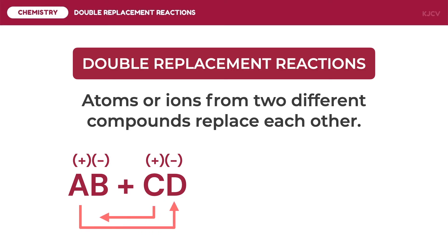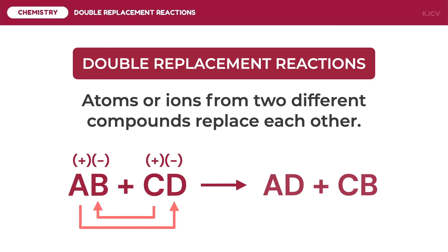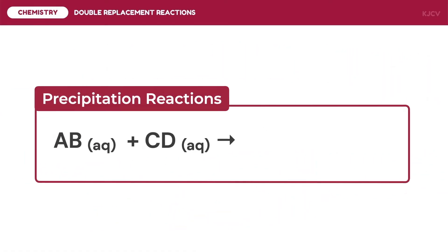In this case, ion A will bond with ion D and ion C will pair with ion B. This double replacement reaction will lead to the formation of compounds AD and CB. In compound AD, A is still the cation and D is still the anion. In compound CB, C is still the cation and B is still the anion. This type of reaction is the driving mechanism of precipitation reactions.